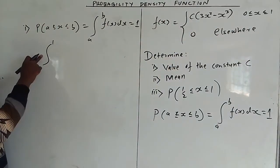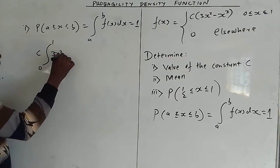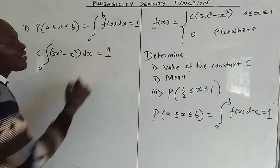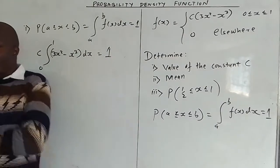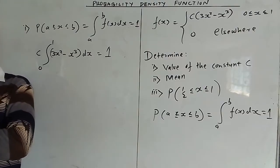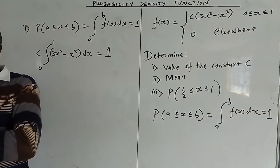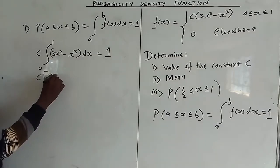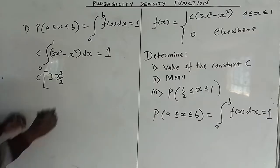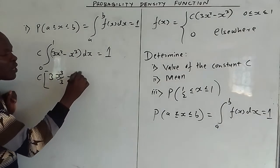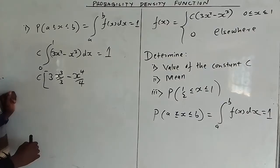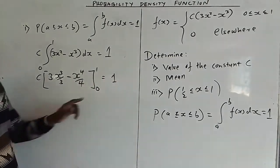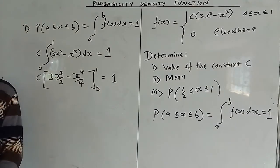Factorizing c outside the integral, we have c times the integral from 0 to 1 of (3x² - x³) dx, and this equals 1. Integrating: the integral of x² gives x³/3, so 3 times x³/3 gives x³. The integral of x³ gives x⁴/4. So we have c times [x³ - x⁴/4] evaluated from 0 to 1, equal to 1.